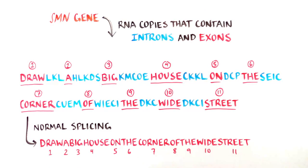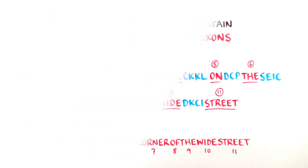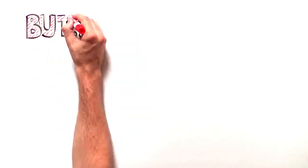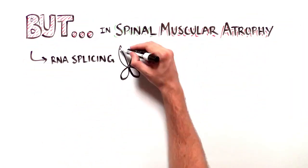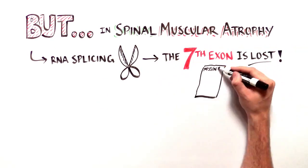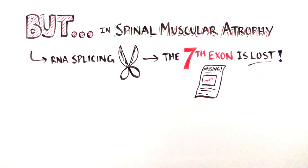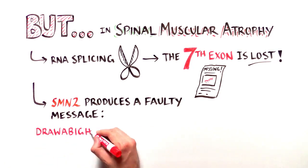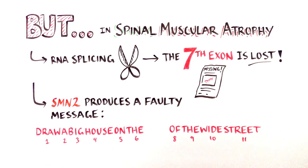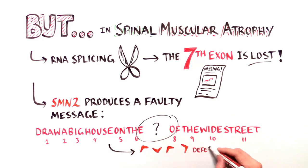The correctly spliced message reads: 'Draw a big house on the corner of the wide street.' In SMA, during RNA splicing, the seventh exon of SMN2 is skipped by the machinery that edits RNA. Skipping exon 7 generates a faulty message: 'Draw a big house on the of the wide street.' Just like removing word number seven leads to a statement that makes no sense, removing exon 7 in the RNA results in a defective protein.